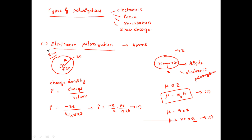Whenever we apply the electric field onto the atom, the positively charged nucleus moves in the direction of the electric field and the negatively charged electron cloud moves in the opposite direction, so charge separation occurs and the atom is converted into a dipole. The dipole moment μ is proportional to the electric field E, and the proportionality constant αe is known as the electronic polarizability.